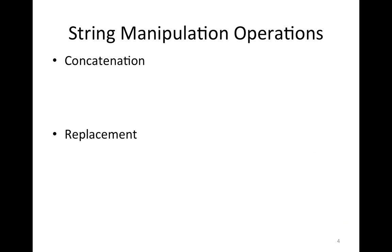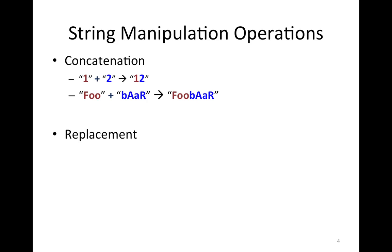What are string manipulation operations? There are two types of string manipulation operations. There is concatenation. In concatenation, you basically take two strings and connect them, or concatenate them. So, we take one and two, and then we get one-two. It's important to understand that we do not deal with numbers here — we deal with strings. So the result is not three; it is actually one-two. You take foo and bar, and you get foobar using the concatenation.